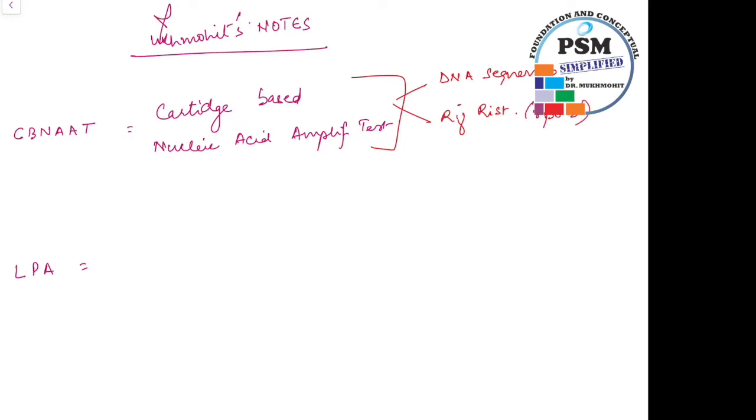The gene which is responsible for rifampicin resistance, you should remember, could be an important MCQ. This is RPOB gene. So what is the basic process by which CBNAT identifies the molecular diagnosis or DNA sequence of mycobacterium tuberculosis? It's fairly simple. It first of all isolates the genomic material from the sample. This genomic material is isolated by sonication followed by amplification of the genomic sequence.